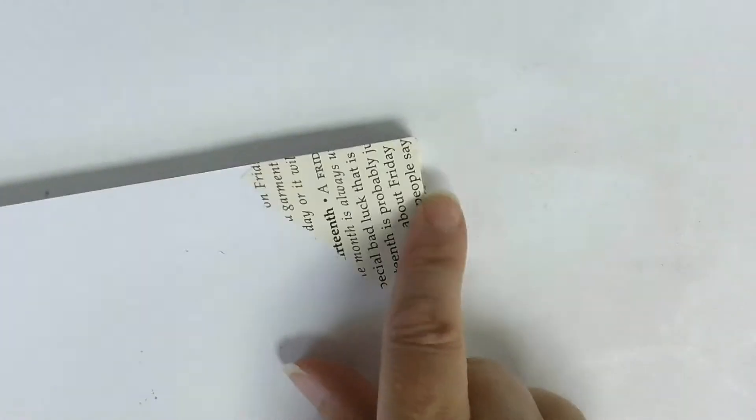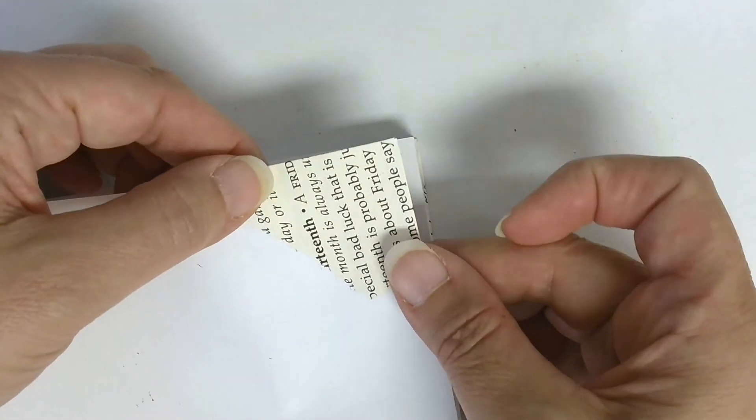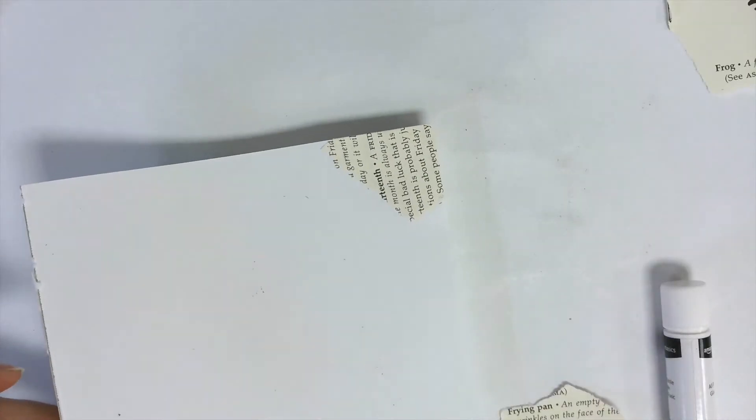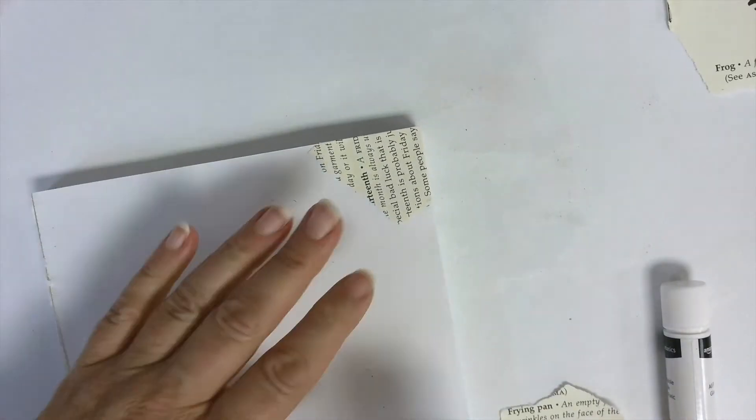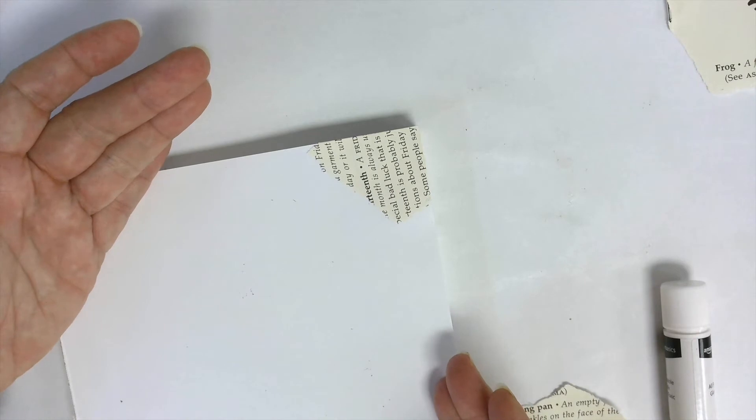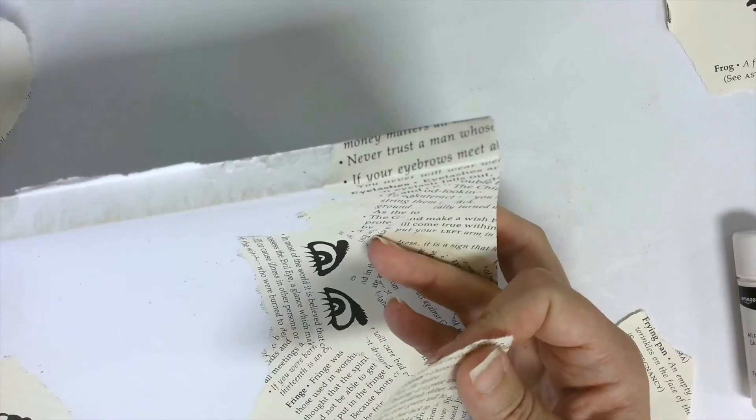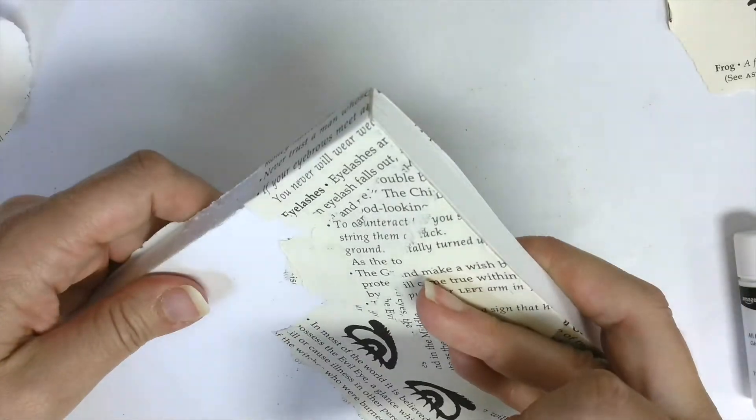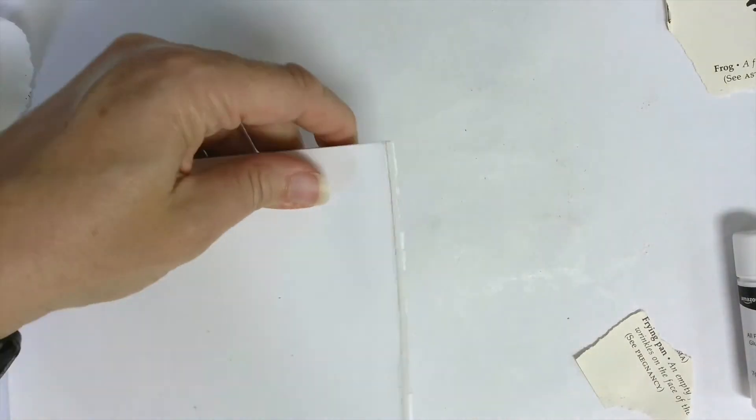You see how those edges come together like that? So that's how you want to do it, and that makes a really super nice professional-looking corner. The only other thing I want to show you is the binding, because I think you guys understand the edges, right? Thumbs up if you understand the edges. Okay, good. Can you guys see this how nice and neat the binding looks there?